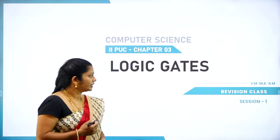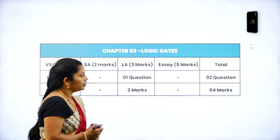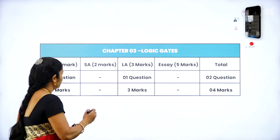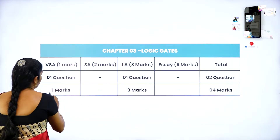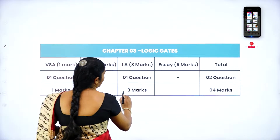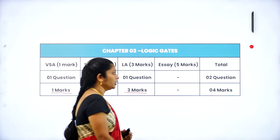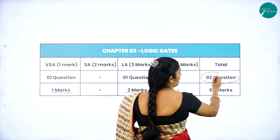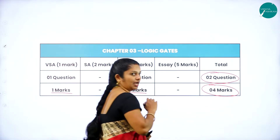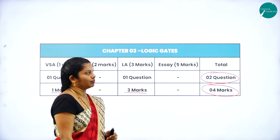Today we are going to start with a revision class on the logic gates chapter. In the annual exam, from this chapter you will get four marks: in Part A you will get one question for one mark, and in Part C you will get one question for three marks — totally two questions, with a total weightage of four marks.